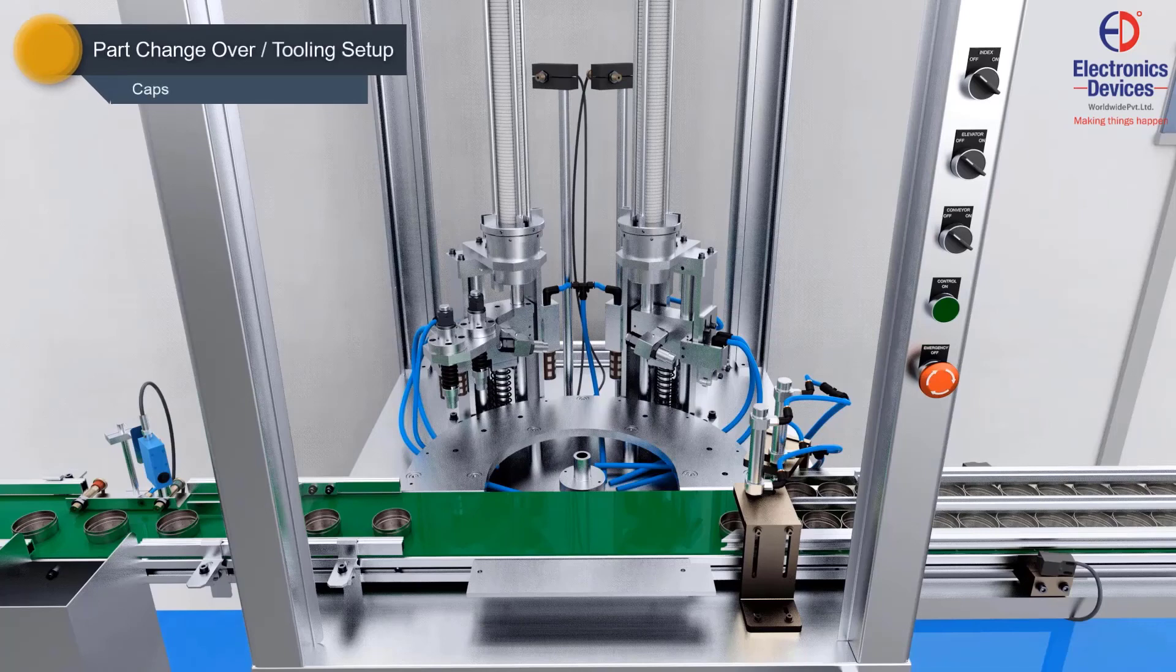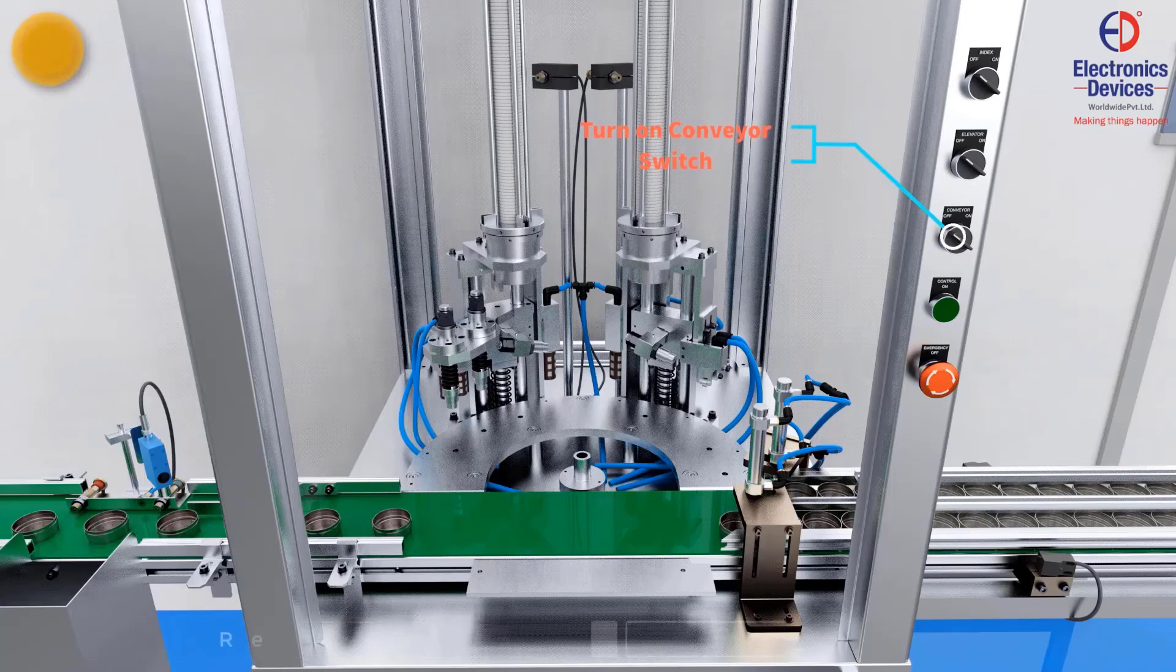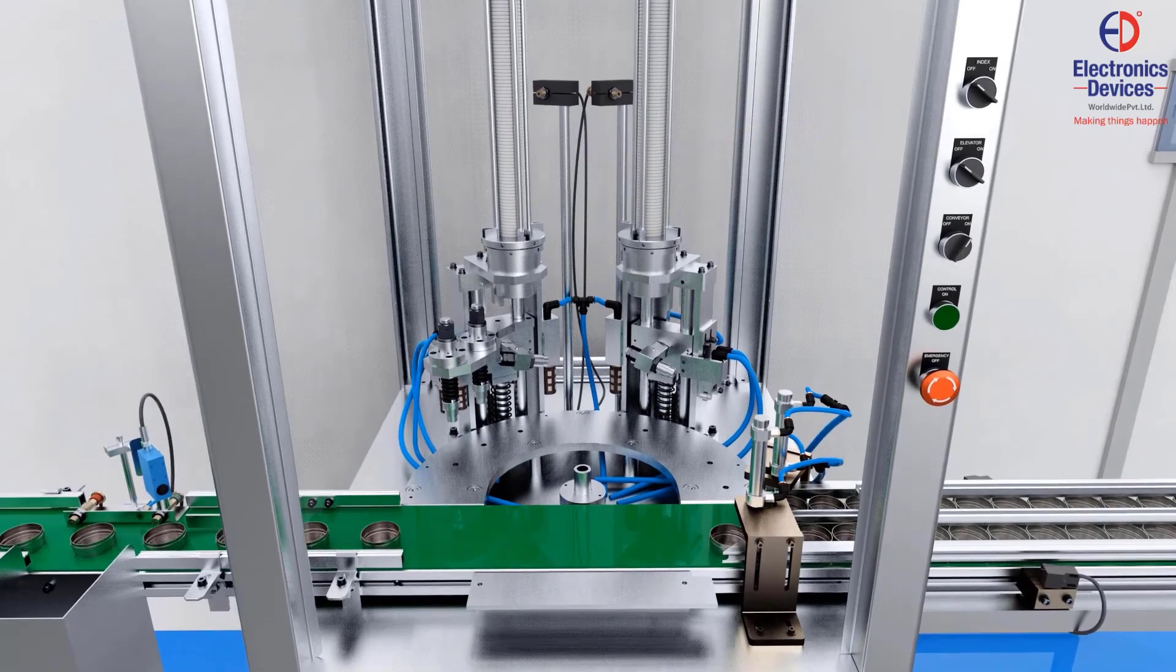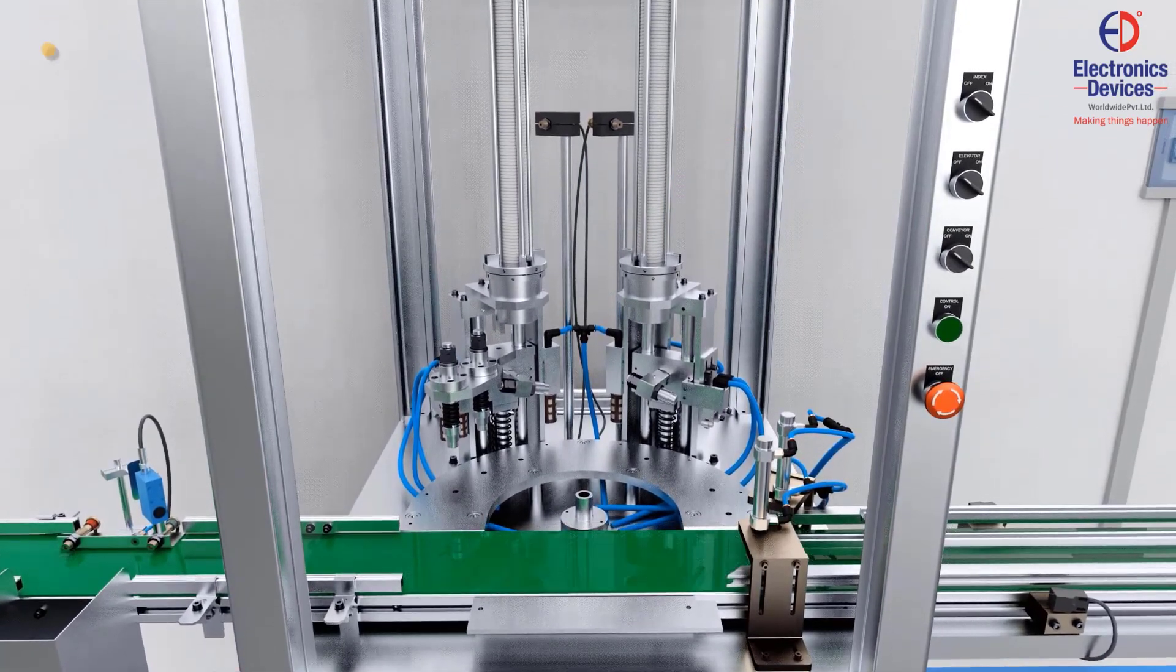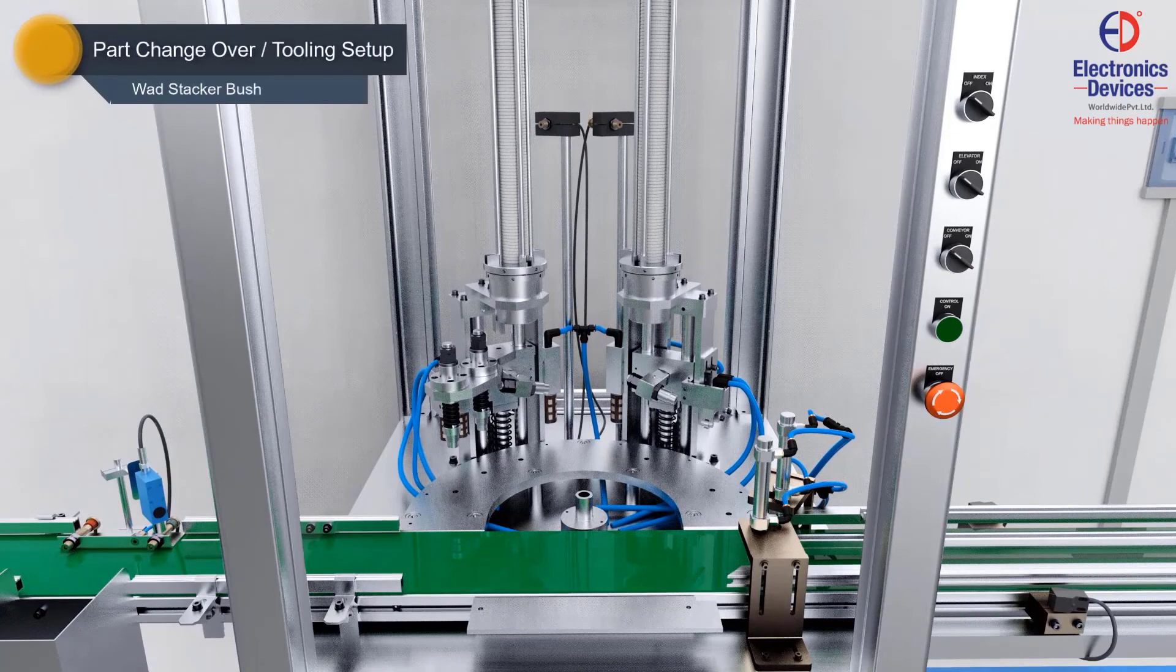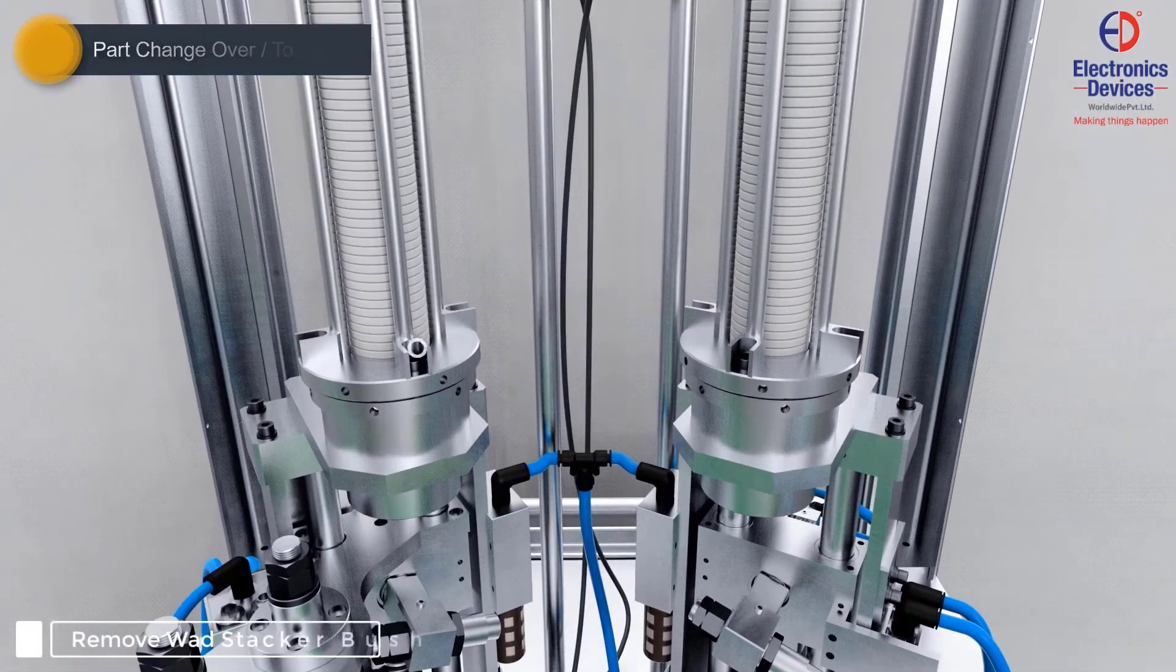Remove leftover caps from the conveyor by pressing the conveyor switch. Remove the switch. At last, remove the wad stacker bush.